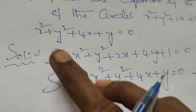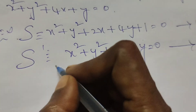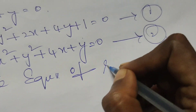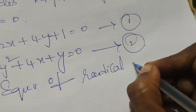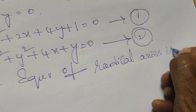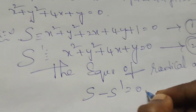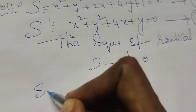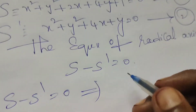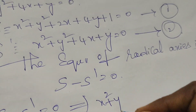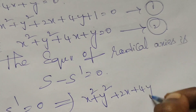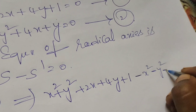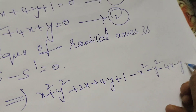Given two circles, assume S and S dash. The equation of the radical axis is S minus S dash equals to 0. So we are subtracting the first and second equations. S minus S dash equals to 0 means: write the first circle S — x² + y² + 2x + 4y + 1 — minus the second circle — minus x² minus y² minus 4x minus y equals to 0.